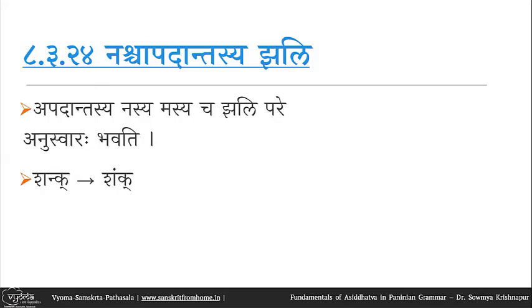This applies extremely frequently with dhatus. If a dhatu is idit, there is num agama — nakara is added after the last ach of the dhatu. So shakhi becomes shankhi, vandi becomes vandhi, kamphi becomes kanphi. In shankhi, the nakara is apadanta and is followed by jhal (kakara), so it is converted to anuswara. Similarly in hinsi, the ns — nakara is converted to anuswara by this sutra.